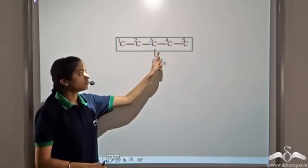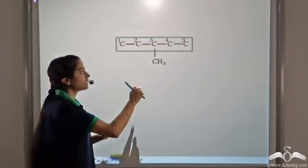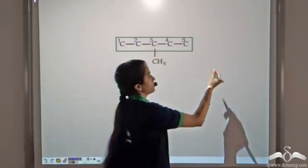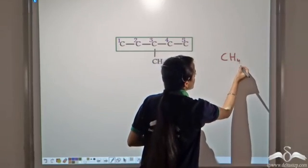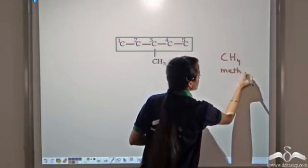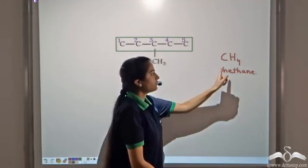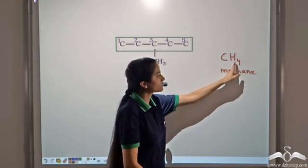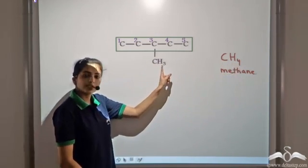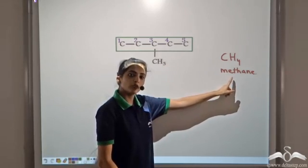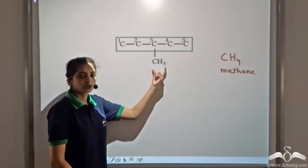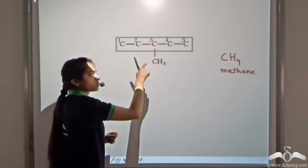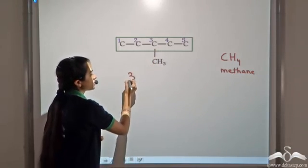The rule says we name the substituent according to the number of the carbon atom at which it is present. CH4 is methane, and when we remove one hydrogen atom, we get the corresponding alkyl group — that is CH3, the methyl group. This CH3 is the methyl group and it is attached to carbon number 3.